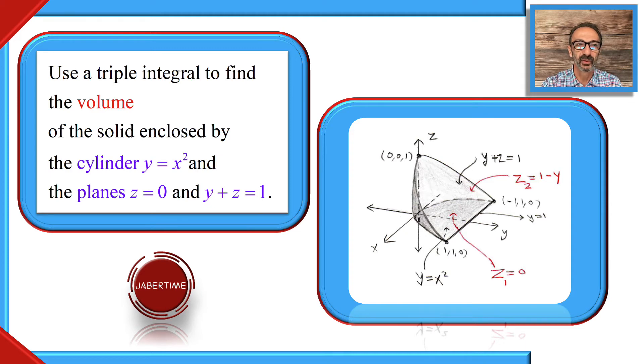Hi, today we're going to go over a triple integral to find the volume of the solid enclosed by the cylinder y equals x squared and the two planes z equals zero and y plus z equals one.